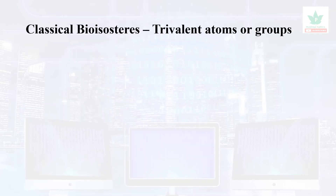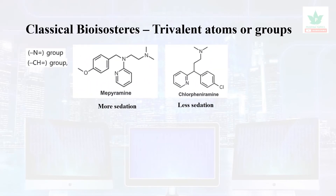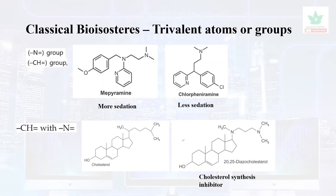For trivalent atoms or groups, such as N=N and CH= groups: Mepyramine and chlorpheniramine are both sedatives, but chlorpheniramine is less sedative than mepyramine. The interchange of CH with N — introducing a nitrogen — gave rise to the compound diazocholesterol.